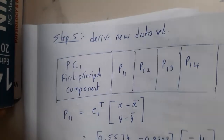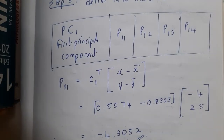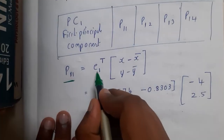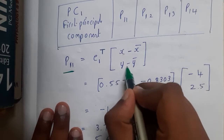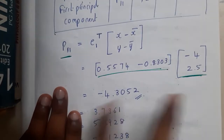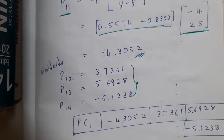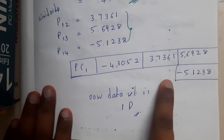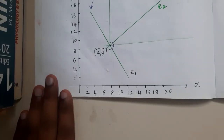Now your goal is to derive the new dataset. The new dataset will have values p11, p12, p13, p14. To calculate p11, take eigenvector 1 transposed and multiply with (X minus X-bar) and (Y minus Y-bar). These values you can get directly from the table. Do the cross multiplication — this times this plus this times this — and continue for the others. This gives us our final table with only a single row or single feature.